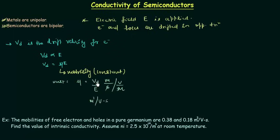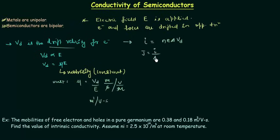Now we can calculate the current density. We know the current I equals N times e times A times Vd, where N is the number of charge carriers, e is the charge of one electron, A is the area of cross section, and Vd is drift velocity. Current density J is I per unit cross-sectional area, so dividing both sides by A gives J equals N times e times Vd. Substituting Vd equals Mu times E gives J equals N times e times Mu times E.